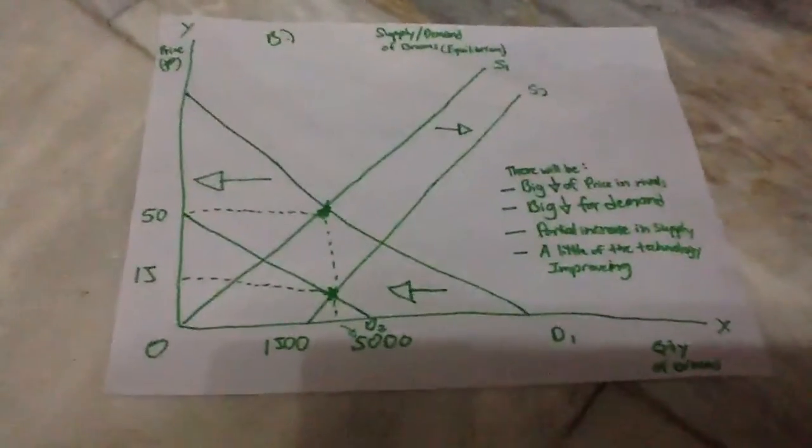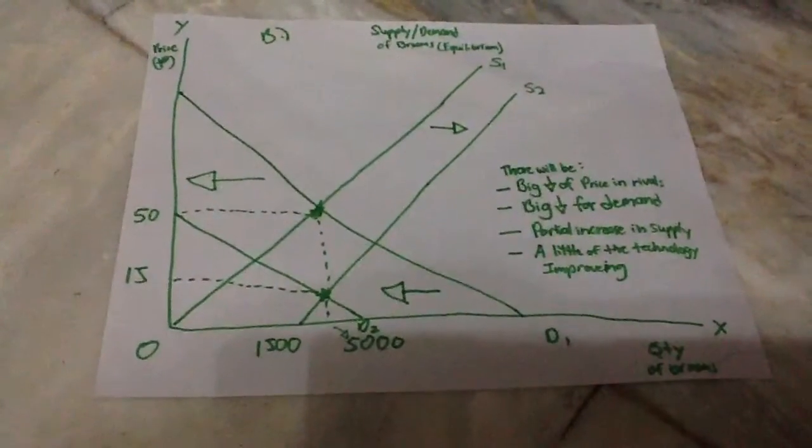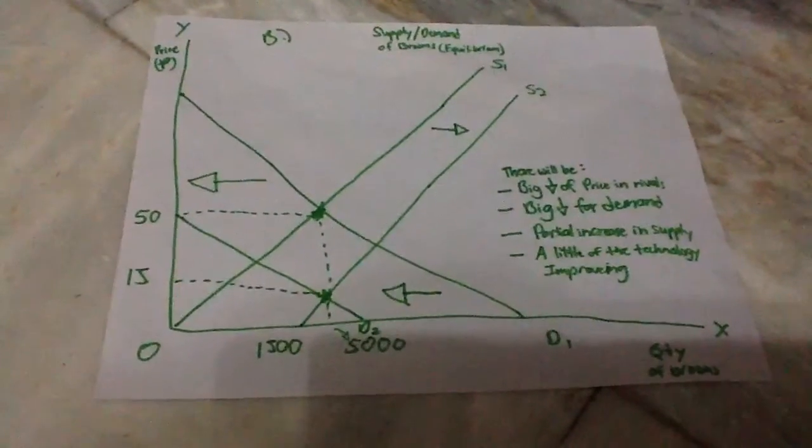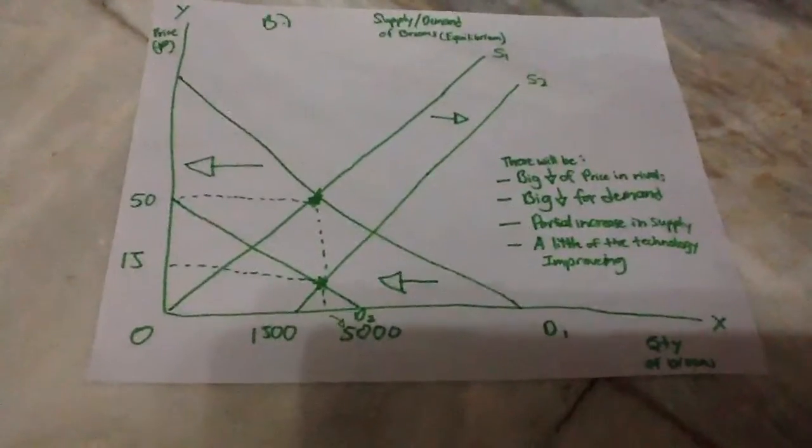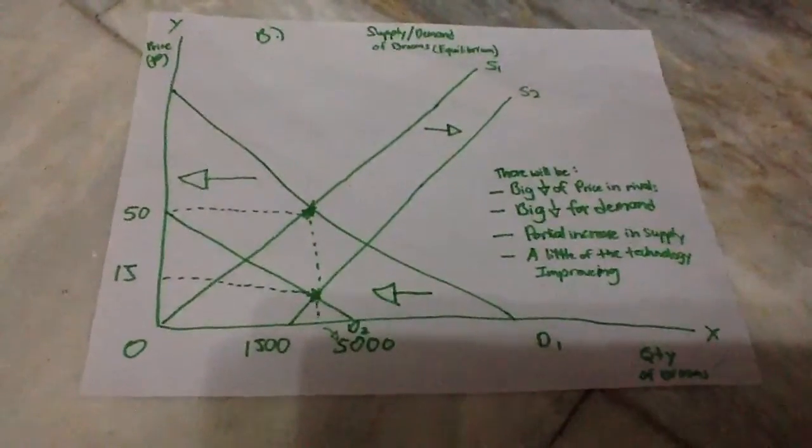This is what I did for that question. As you can see, there will be a big decrease of price in the rivals, big decrease for the demand, partial increase in the supply, and a little of the technology improving.